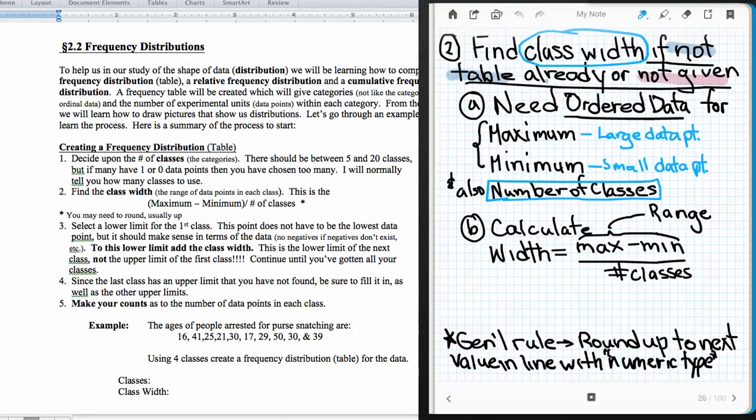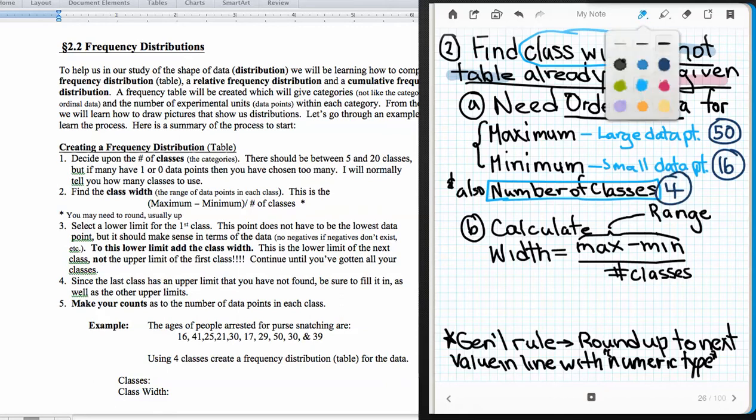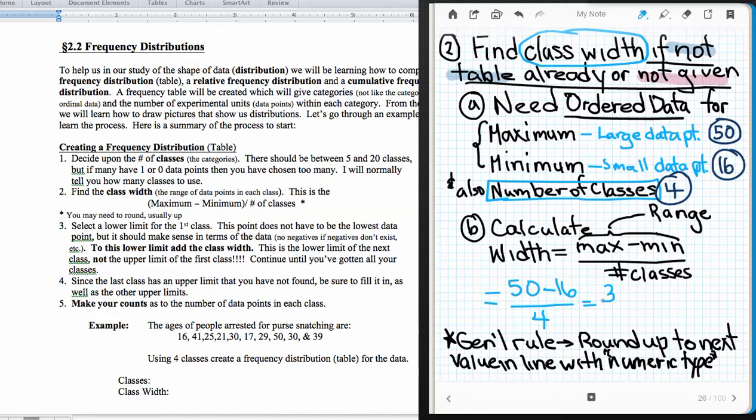So over here, we have that this is 16 and 50. So 50 for my maximum, 16 for my minimum. So those are the two from the ordered data. And our number of classes, we have our 4. And so we're going to put this into the formula. So our formula is going to give us our width by taking the maximum, 50, subtracting our minimum, 16, and dividing by 4. So 50 minus 16 is 34. And divided by 4 is going to give us 8.5. 4 will go into 34, 8 times 2 left over. 2 and a 0 make 20. 4 goes into 25 times.